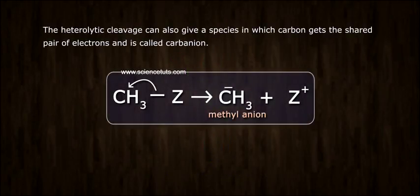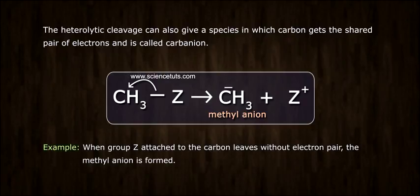The heterolytic cleavage can also give a species in which carbon gets the shared pair of electrons and is called carbanion. Example: When group Z attached to the carbon leaves without electron pair, the methyl anion is formed.